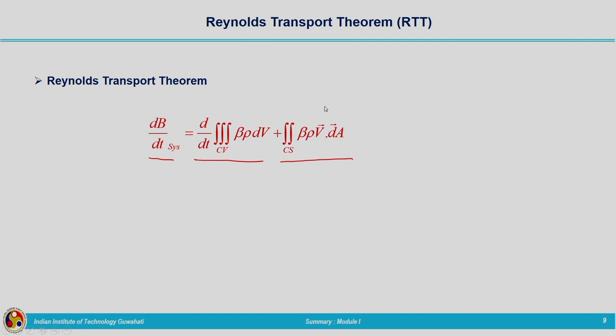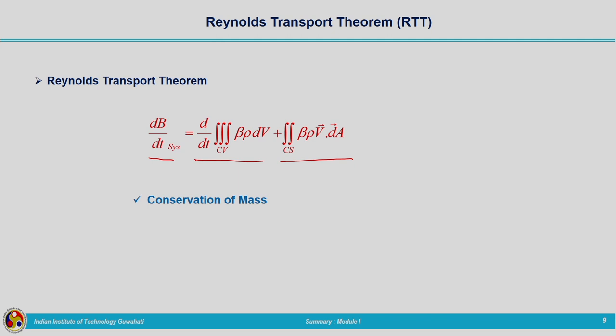After deriving the Reynolds Transport Theorem we used it to derive conservation laws: conservation of mass, conservation of momentum, and conservation of energy. After that we saw some numerical examples — two examples for understanding the mass balance equation, which is nothing but our continuity equation. In the next lecture we will be moving on to the second module related to hydrologic processes. Here I am winding up the summary of module 1. Thank you very much.